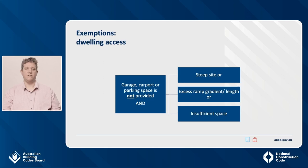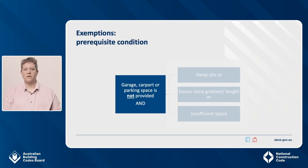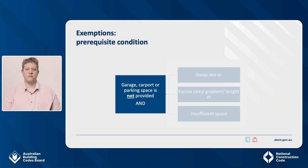NCC Volume 2 Clause H8D2 2a indicates you cannot apply an exemption unless you can establish that step-free access is not provided from an appurtenant garage, carport or car parking space. Some examples are: no garage, carport or parking space is proposed on the site; the garage, carport or parking space is on a different level to the rest of the dwelling; or exclusive car parking is not provided. The exemption only applies to the ground where the access path would be constructed, not to the entire site. If the site has several possible locations where an access path could be constructed and at least one of these is 1 in 14 or less, then the exemption would not apply.